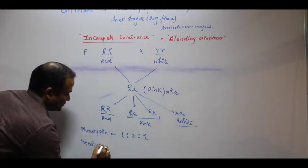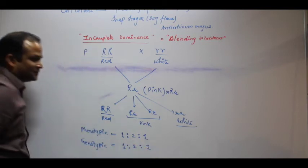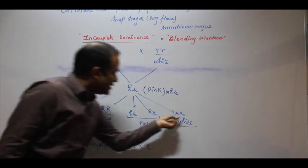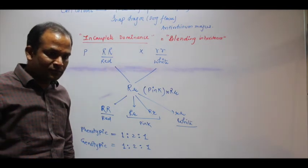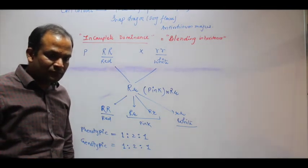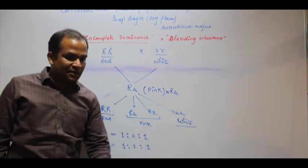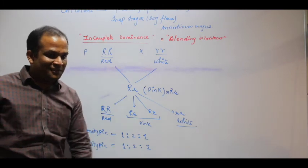Why did white come? If there was blending, then pink color cannot produce white color. Can you add colors and make white from pink? This is why white came. He said that blending hypothesis is wrong. There is no blending.